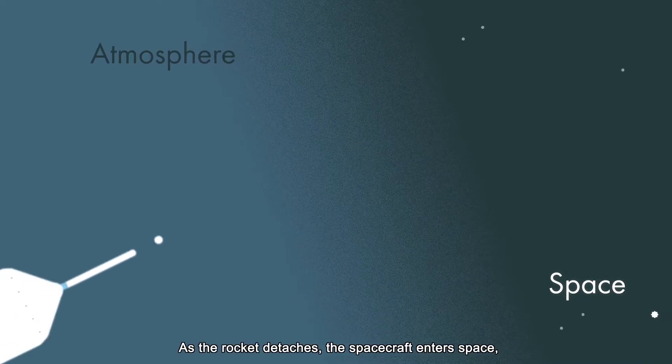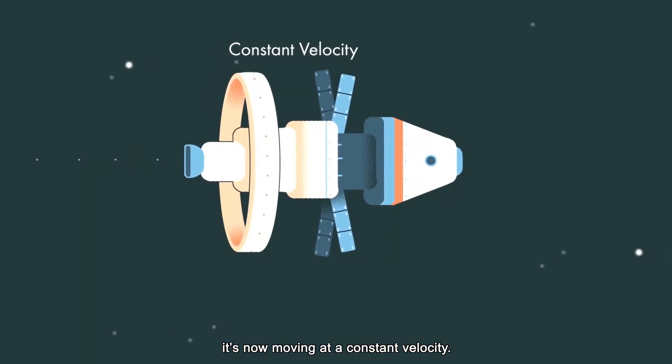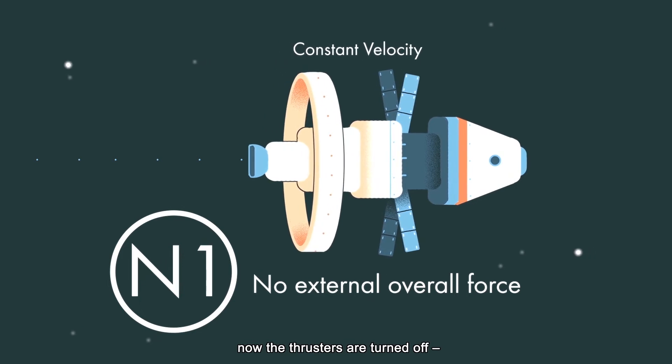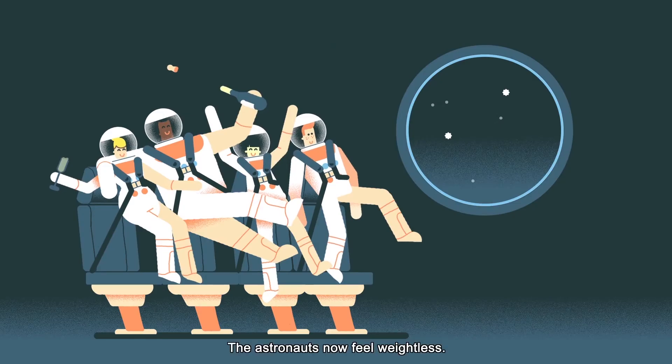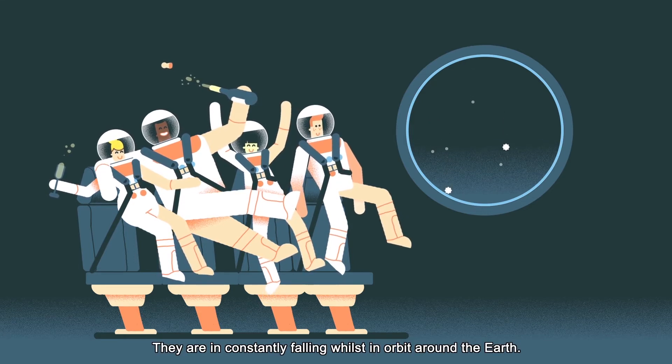As the rocket detaches, the spacecraft enters space. It is now moving at a constant velocity. Because there is no overall force acting on it, now the thrusters are turned off. This is Newton's first law. The astronauts now feel weightless. They are constantly falling whilst in orbit around the Earth.